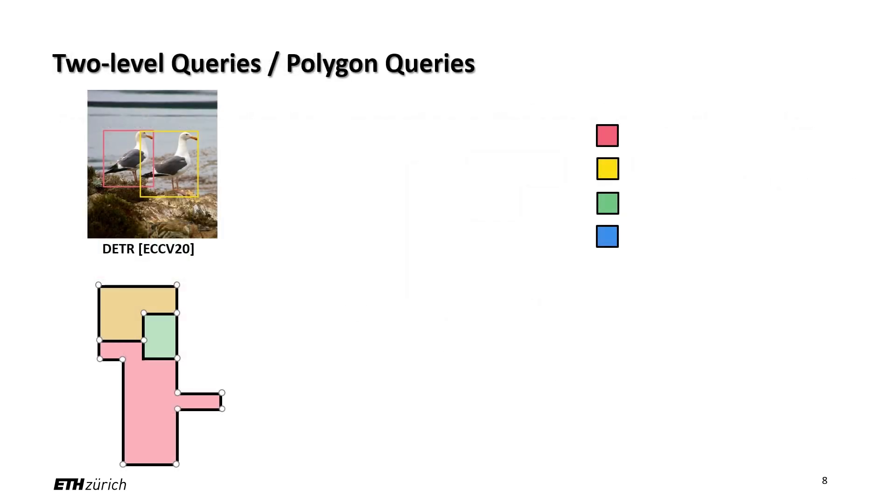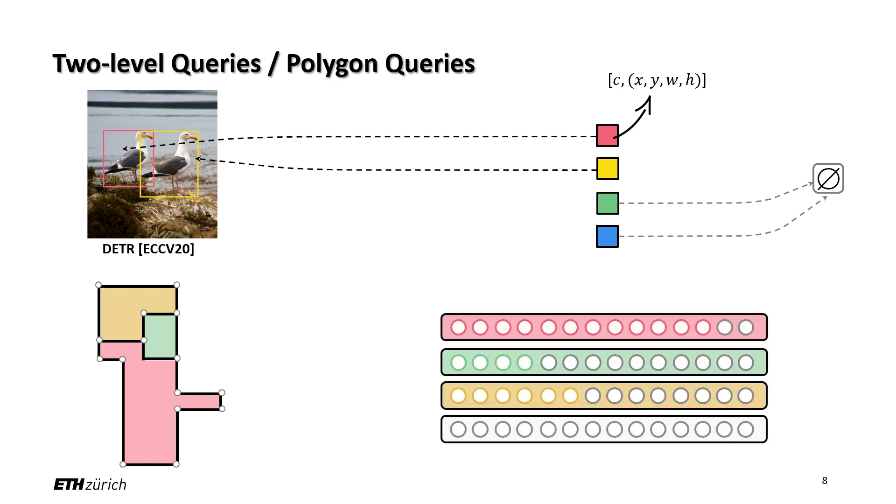Our work is inspired by the Detection Transformer, which uses single-level queries to model a set of bounding boxes. However, different from bounding boxes which can be represented by a fixed number of parameters, polygons have an arbitrary number of vertices. To this end, we propose novel two-level queries, one level for room polygons and one level for their corners.